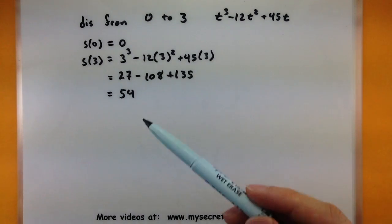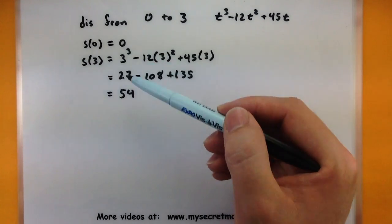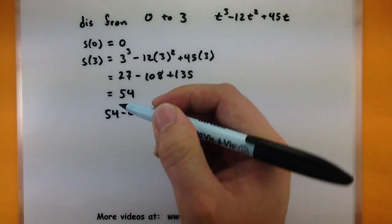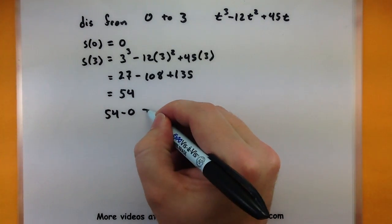So in terms of how far did it go from 0 to 3, I can look at the difference of these two things. And that tells me that it traveled 54 meters.